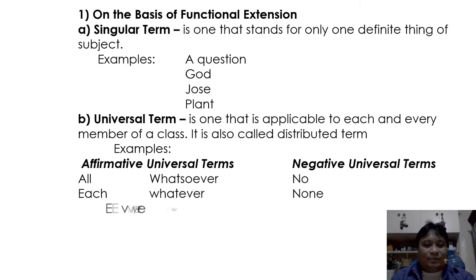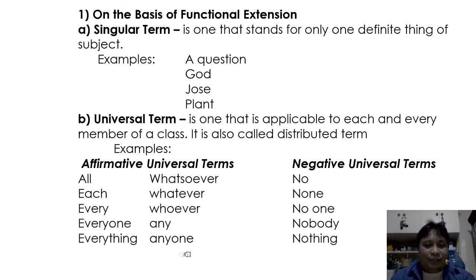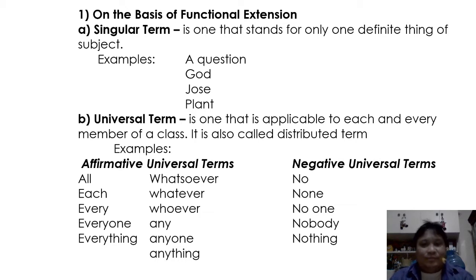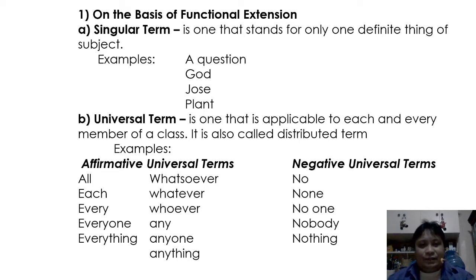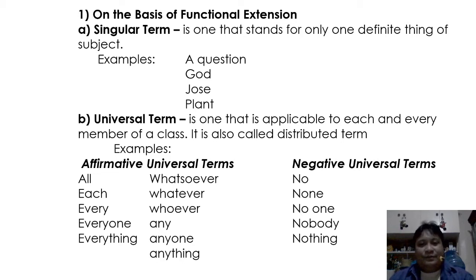Affirmative universal terms include: all, each, every, everyone, everything, each and every, whatsoever, whatever, whoever, any, anyone, anything, always, at all times. Negative universal terms express negative ideas: no, none, no one, nobody, nothing, none at all. These are all negative universal terms.